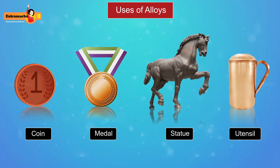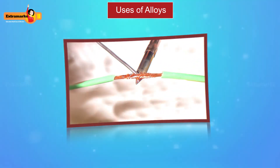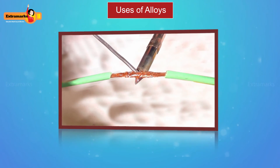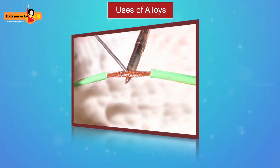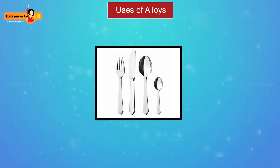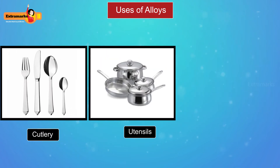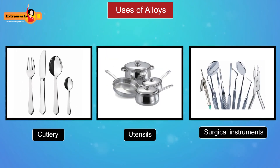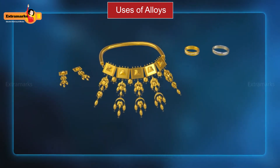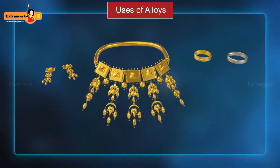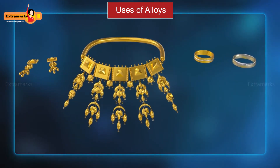Solder is used for joining electrical wires together. Stainless steel is used to make cutlery, utensils, and surgical instruments. Alloys of gold are extensively used for making ornaments.